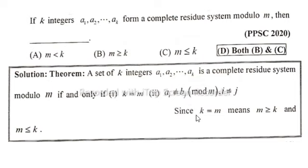Since k is equal to m means m greater than or equal to k and m less than or equal to k.